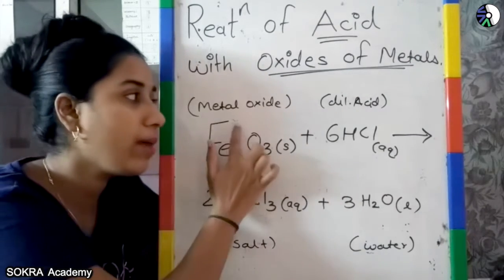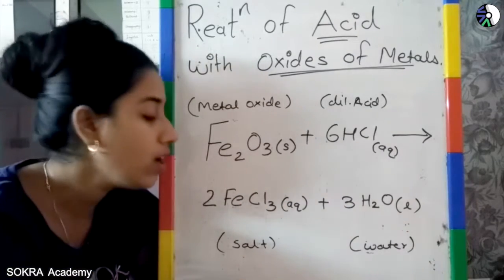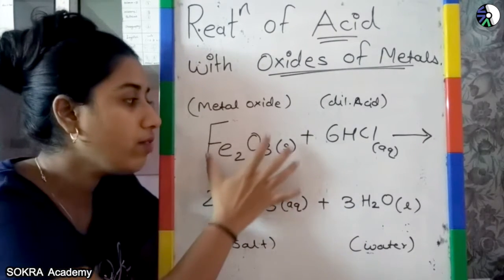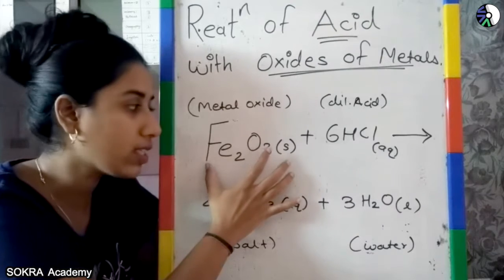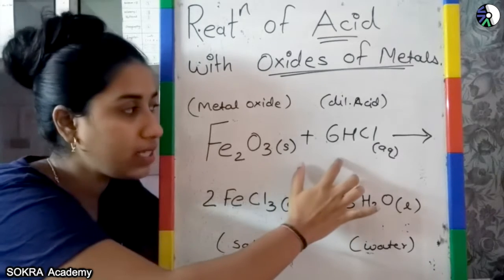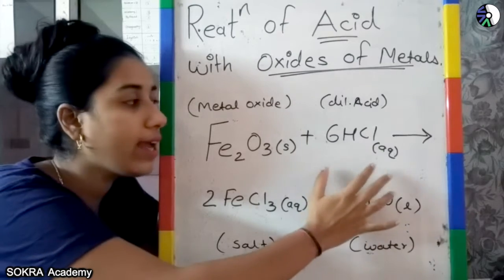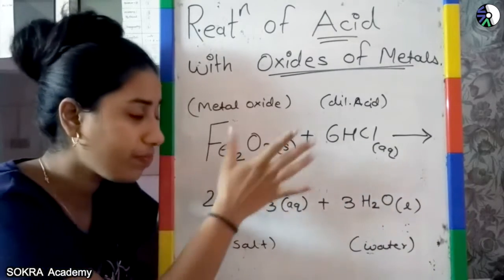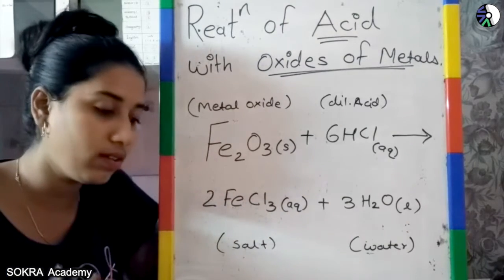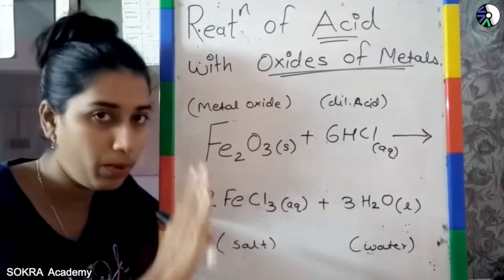So here I have given one example in which I have taken the metal oxide, it is nothing but the ferric oxide. Ferric oxide I have taken here, plus 6 HCl, hydrochloric acid, diluted hydrochloric acid. First of all, it is what? It is a red oxide, it is a metal oxide. So what is it? It is not water-soluble.